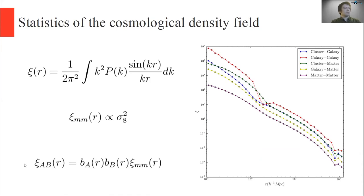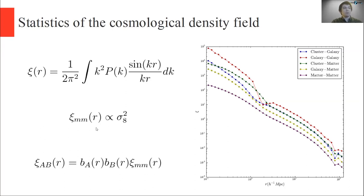Correlation functions are very frequently used as cosmological observables, and our analysis is no exception. A correlation function has many equivalent definitions — you can think of it as a Fourier transform of a power spectrum, or as a second moment of a density field. It's a result of cosmology that the matter-matter correlation function is proportional to the square of sigma eight, which is why we're so interested in sigma eight — it's proportional to the amount of structure there is. Now, since the density field is dominated by dark matter and we can't observe it directly, we have to use what are called tracers.